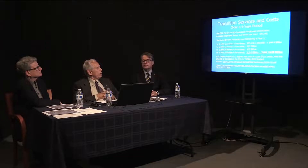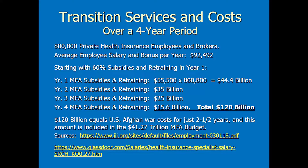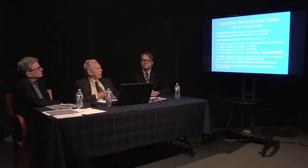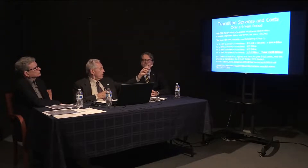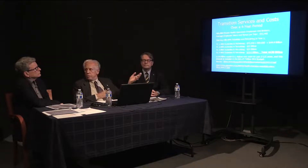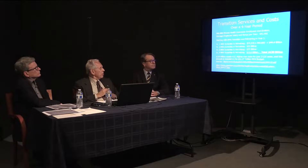First year: we would subsidize them in retraining — $44.4 billion, so they get on average $55,500 out of their $92,500. Year two: $35 billion — still more than a third of the $92,500. Year three: $25 billion. Finally, year four: $15.6 billion. That totals $120 billion of assistance to people in the insurance industry. To put that in perspective, $120 billion equals the United States Afghan war cost for only two and a half years — so that alone, if we happened to pull out of Afghanistan, would actually pay for all these people. We're very comfortable about how to fund that.